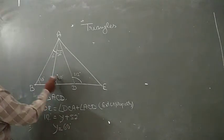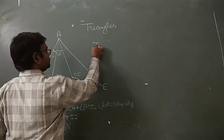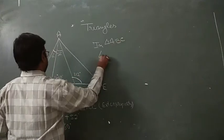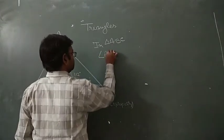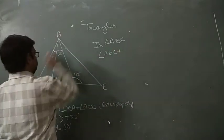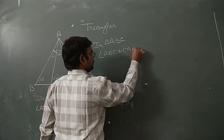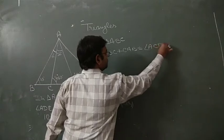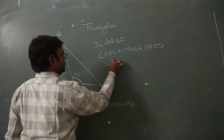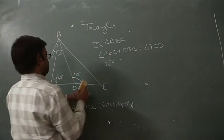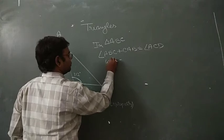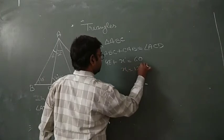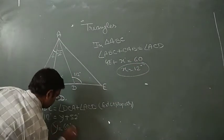Now to find the value of x, similarly in triangle ABC using the exterior angle property: angle ABC plus angle CAB equals angle ACD. So 48 degrees plus x degrees equals 60 degrees, giving x equals 12 degrees. These are your answers.